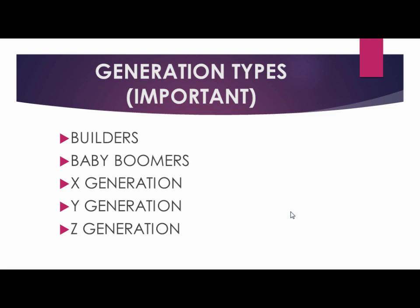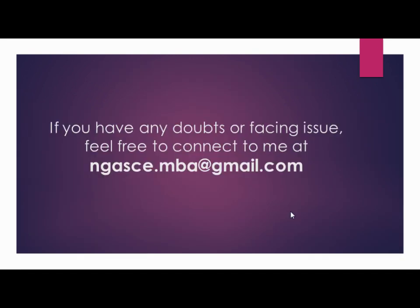Next comes generation types, which is important from an MCQ perspective. You should be aware of the different generations. The first is the Builders generation, born before 1945. Then comes Generation X, from 1965 to 1980. Next is Generation Y, from 1981 to 2000. Finally, Generation Z covers those born after 2000. Be aware that exact year boundaries can vary in different references.